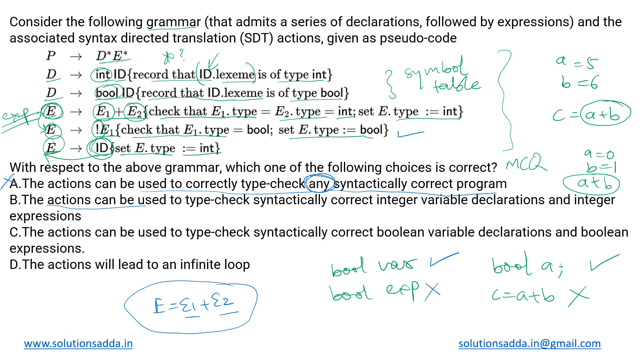Then going to the next one: the actions can be used to type check syntactically correct integer variable declarations and integer expressions. So we just saw in this particular line integer expressions are being validated, and below we also saw that integer variable declarations are also validated. So if we have expressions such as int E1 equal to 4 something, then that would be validated along with the integer expressions. So this one definitely seems true.